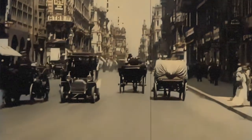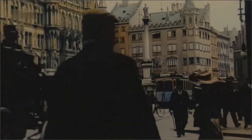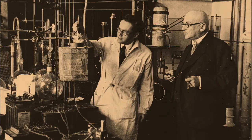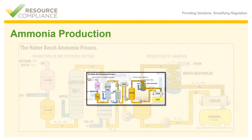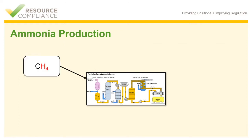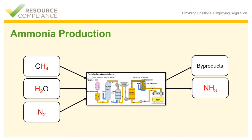Ammonia was first manufactured in Germany in 1913. Fritz Haber and Karl Bosch are credited for developing the manufacturing process of anhydrous ammonia. This achievement won them Nobel Prizes in 1918 and 1931. Simply put, there are three inputs into the ammonia production process: CH₄ (methane) and H₂O (water), and N₂ (nitrogen). What comes out of this process — the final output — is NH₃, ammonia, plus some byproducts.